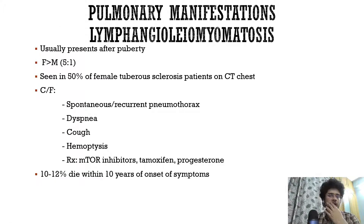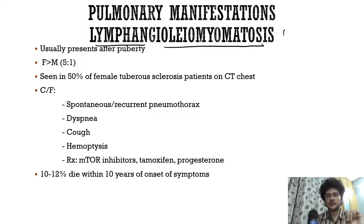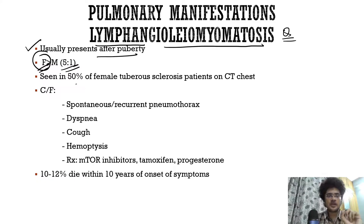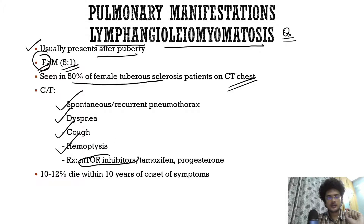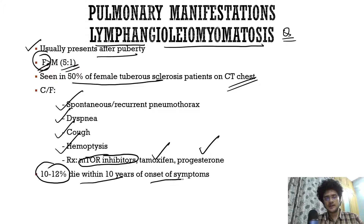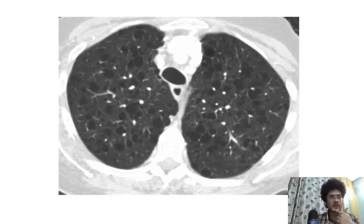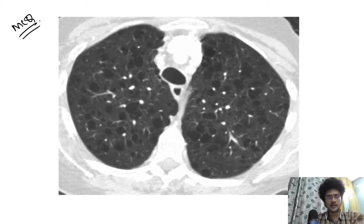Pulmonary lymphangioleiomyomatosis is a very important manifestation seen predominantly in female patients, presenting after puberty at a 5:1 female-to-male ratio. 50% of female tuberous sclerosis patients will have LAM on CT chest. Clinical features include spontaneous or recurrent pneumothorax, dyspnea, cough, and hemoptysis. It responds to mTOR inhibitors; tamoxifen and progesterone can also be used. 10 to 12% of patients die within 10 years of symptom onset. The CT chest picture of LAM is an important picture MCQ.